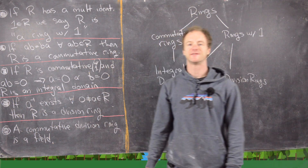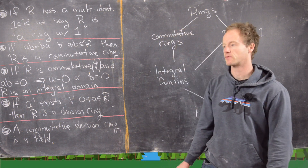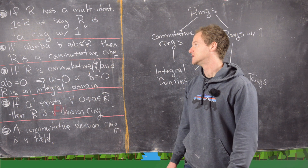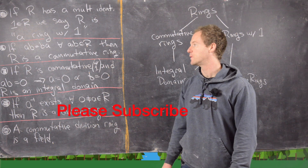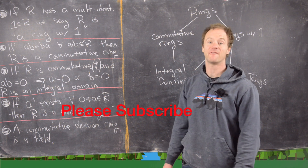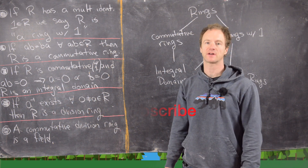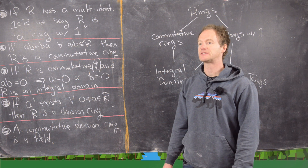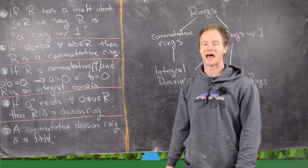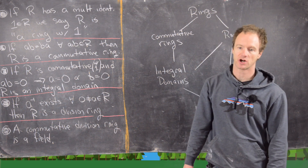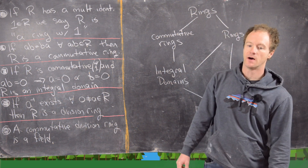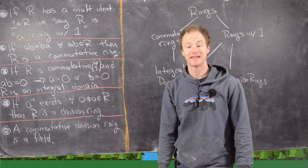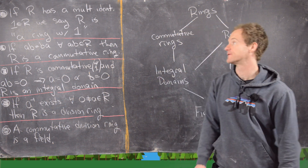In a previous video we defined the notion of a ring and looked at some examples. In this video we want to look at five special cases of rings — some types of rings that have added structure — see how they relate to each other, and give some examples.